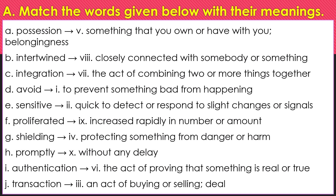D. Avoid: to prevent something bad from happening. E. Sensitive: quick to detect or respond to slight changes or signals. F. Proliferated: increased rapidly in number or amount. G. Shielding: protecting something from danger or harm. H. Promptly: without any delay. I. Authentication: the act of proving that something is real or true. J. Transaction: an act of buying or selling, deal.